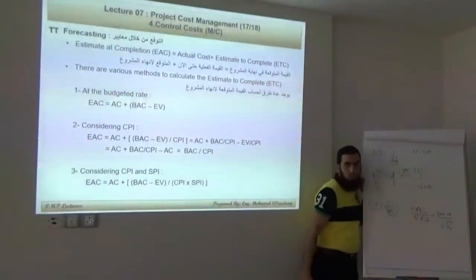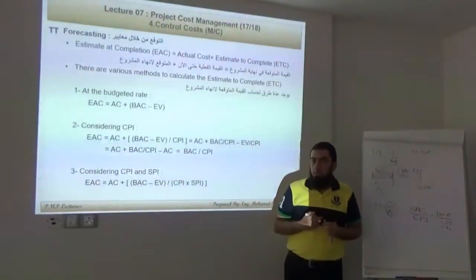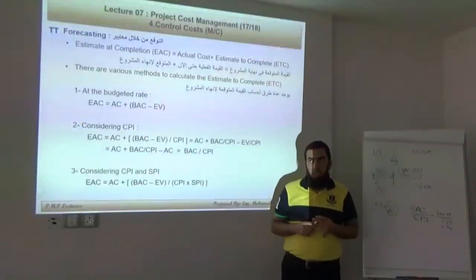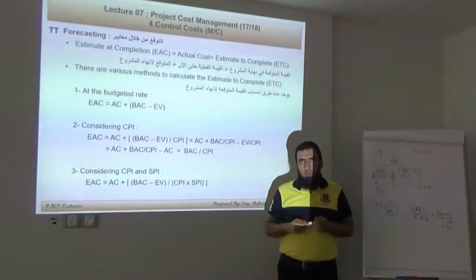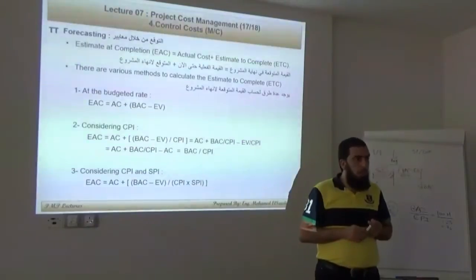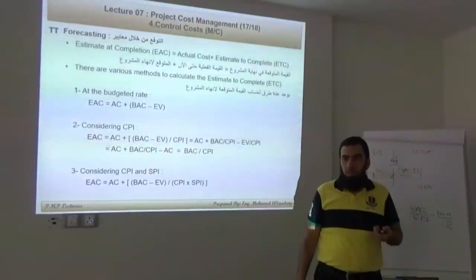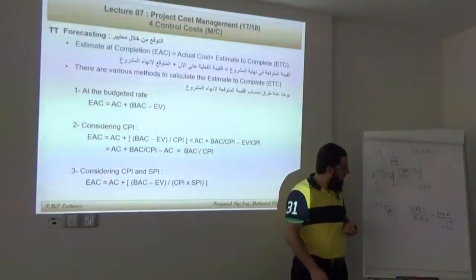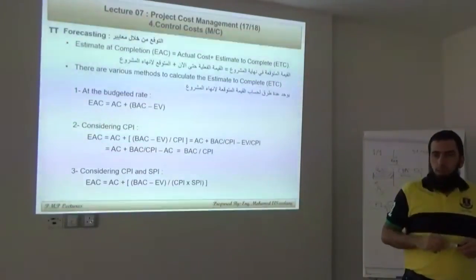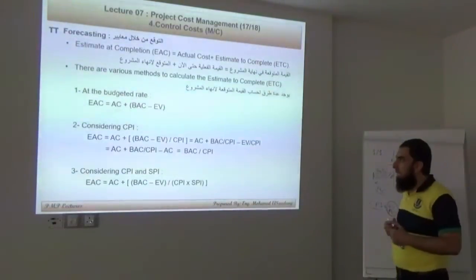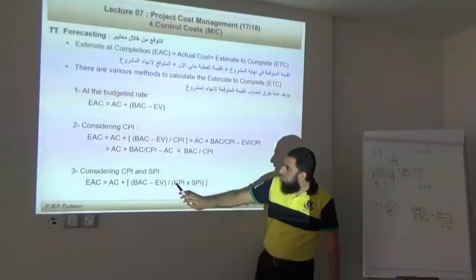The CPI is like a project efficiency metric — it is better to use the standard EVM terminology CPI, but conceptually it expresses part of the efficiency of the project. The third method considers both CPI and SPI: EAC = AC + (BAC − EV) / (CPI × SPI).